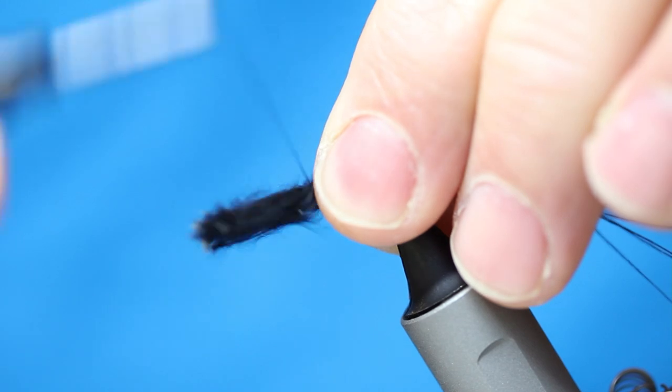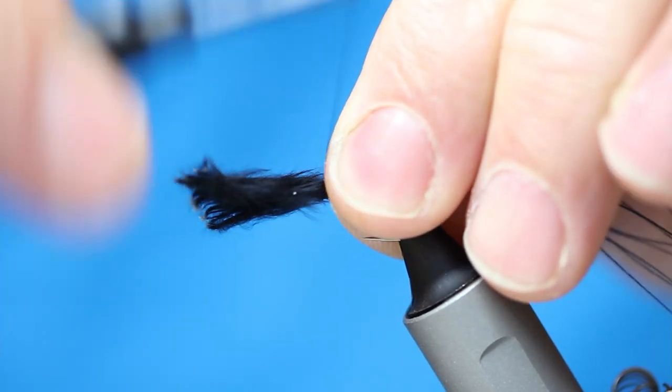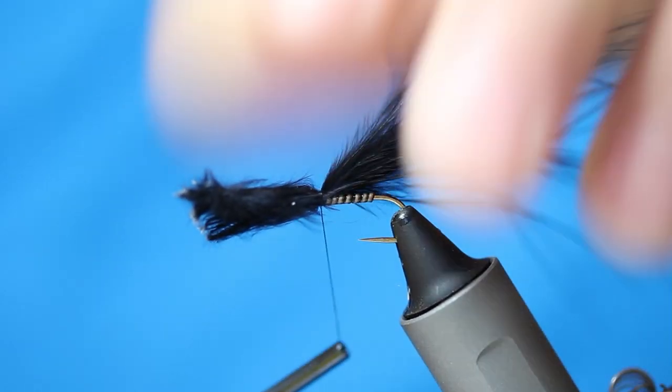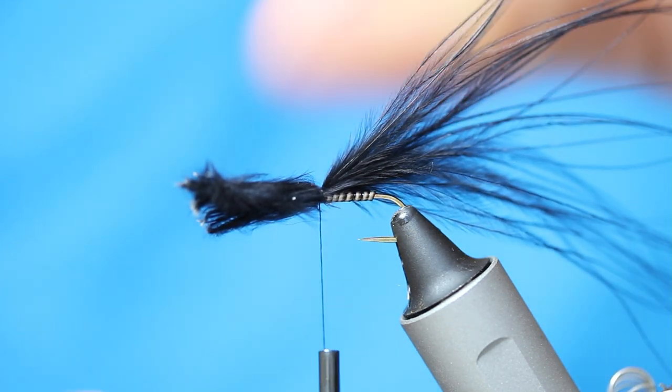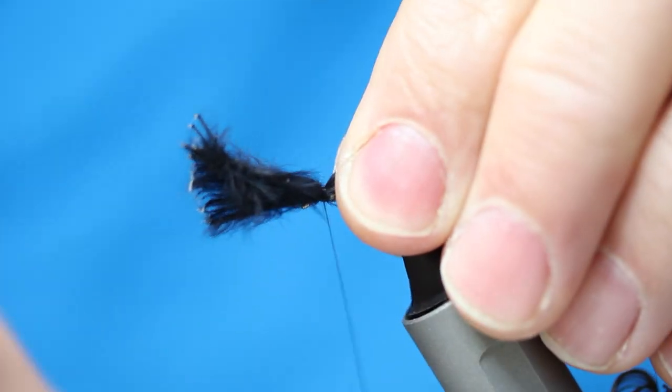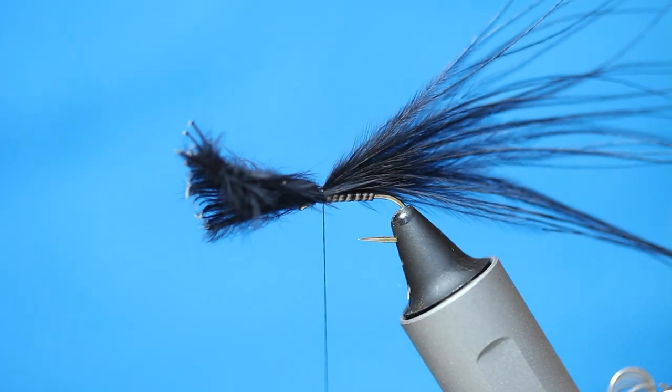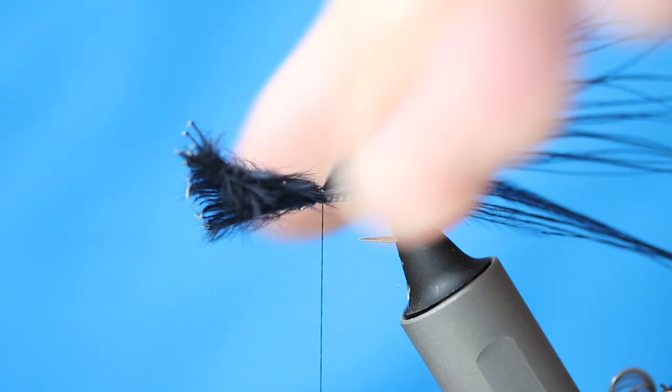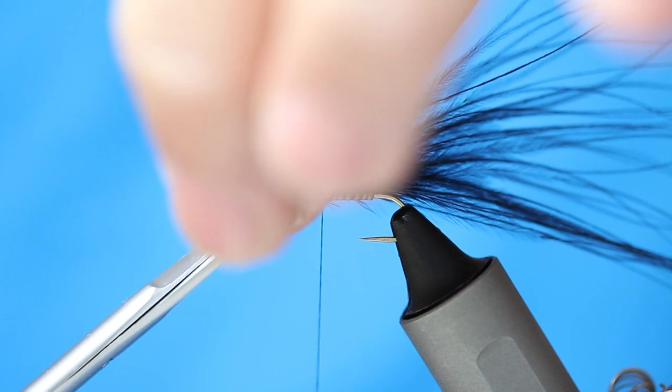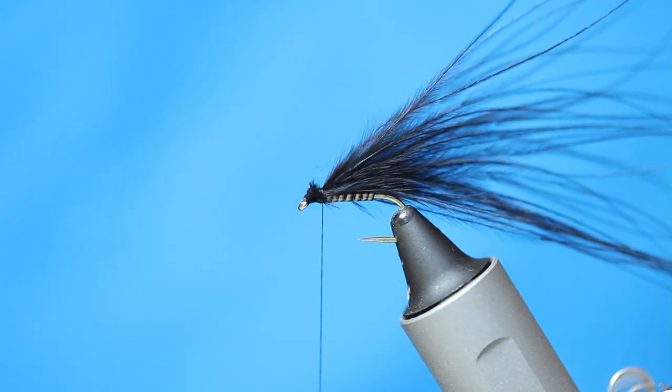And then pinch and loop. Try and get where your thread is. So that's where your herl stops there. Like so. Couple of turns. I'm going to have a sharp pair of scissors. Pull everything up at an angle and cut.